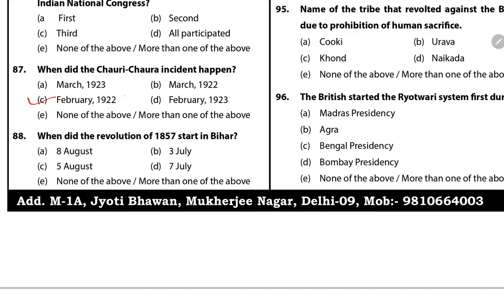Question 88: When did the Revolution of 1857 start in Bihar? The answer is B — 3 July. The Freedom Struggle of 1857 started on 3 July in the Gurhatta locality of Patna City under the leadership of Peer Ali. In this rebellion, Lyle, an agent of the opium trade, was killed.